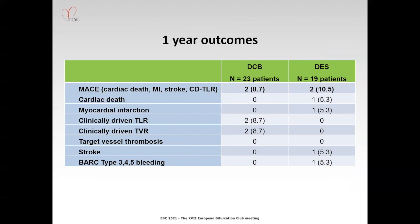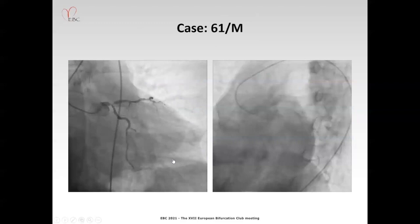In the drug-eluting stent group, one patient died from myocardial infarction — this patient had already had left main myocardial infarction on arrival and died several hours after stent PCI. After one year follow-up, there were two target lesion revascularizations in the drug-coated balloon group and two events in the drug-eluting stent group, including one cardiac death and one cerebral hemorrhage.